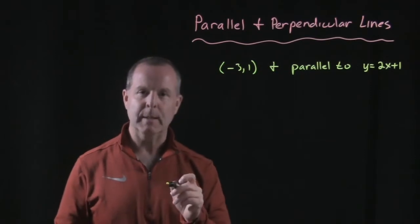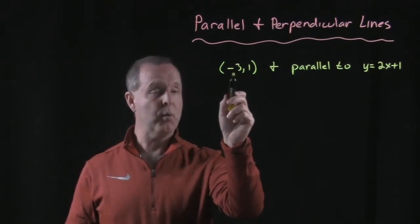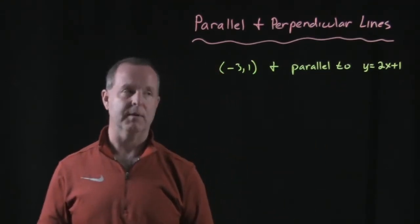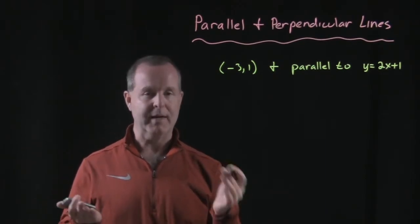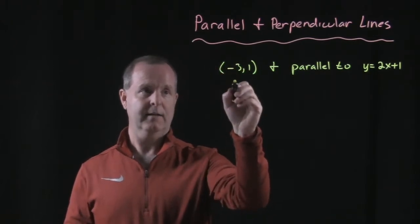So let's use that information to see if we can come up with the equation of a line that passes through the point (-3, 1), but it's also parallel to y = 2x + 1. So in order to use point-slope, do we have a point? Yes. Check. Do we have a slope?